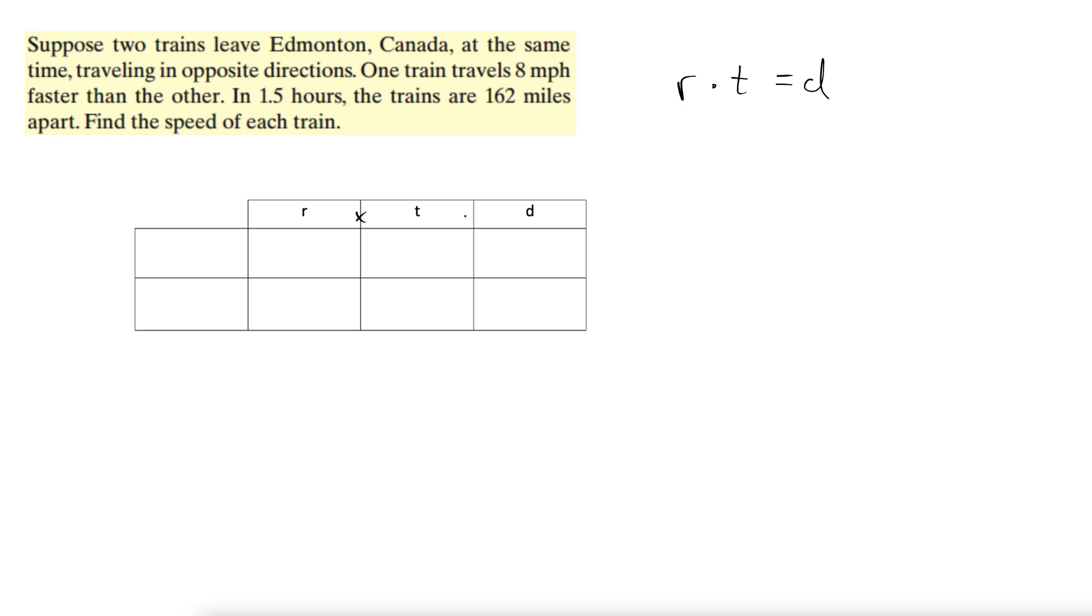Here's the table: rate times time equals distance. Let's see what we have here. To fill in the rest of it, this train is faster, so I'm going to say fast train and slow train. We have a fast train and a slow train.